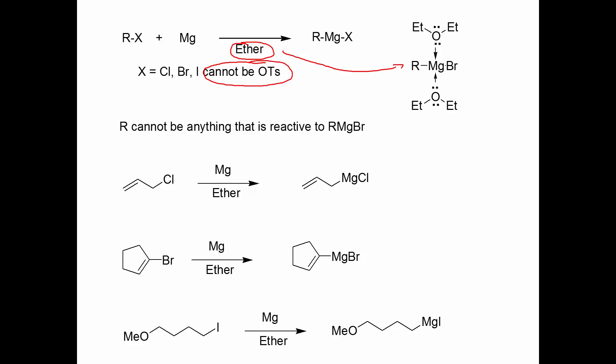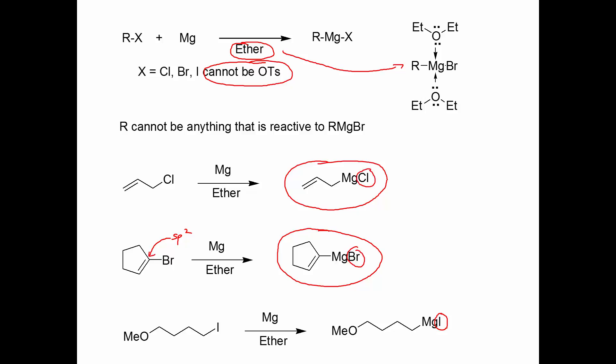R just can't be anything reactive to a Grignard reagent. Here are a few examples: an allyl chloride makes the allyl Grignard. A vinyl bromide, where the bromine is attached to sp2 carbon, makes the Grignard reagent no problem. You can make a Grignard reagent in the presence of an ether — that's one of the functional groups that's okay. Alkenes are also okay. The halogen can be any of them — iodide turns into the corresponding Grignard — it really makes no difference, except fluorine.